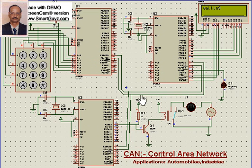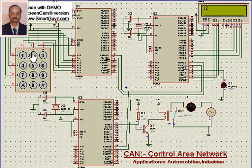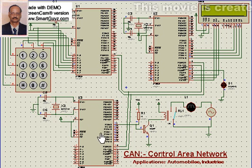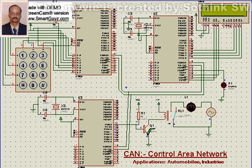When we start inputting data — for example, I press one, the display gives me one. I press two, the display gives me two. I press three, the display gives me three. When I press four, this microcontroller receives that information through the bus, and once it receives 1, 2, 3, 4, the work is done: the transistor turns on, the relay switches on, the switch changes, and the lamp turns on.